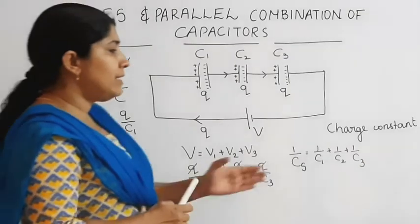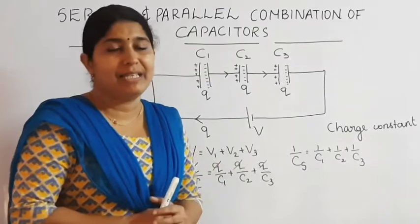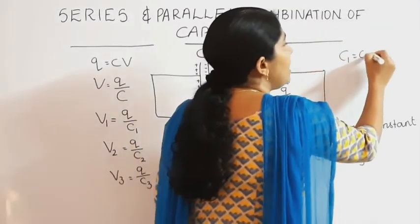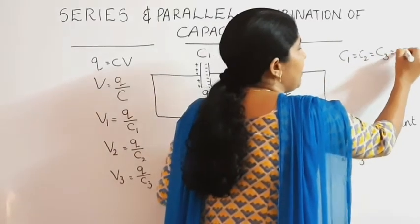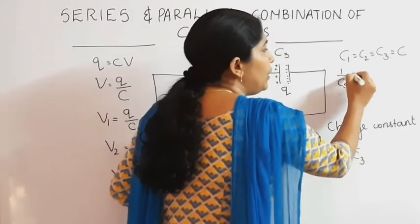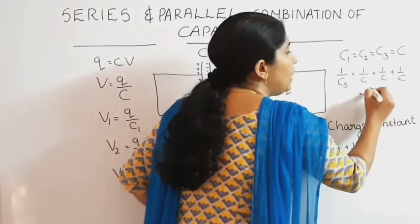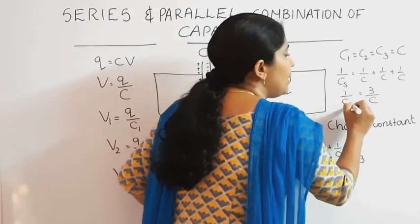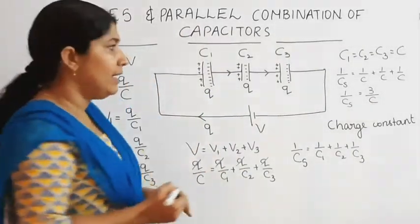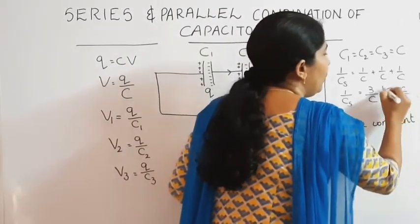If all capacitors C1, C2, C3 have the same capacitance, that is C1 equals C2 equals C3 equals C, then 1 by Cs equals 1 by C plus 1 by C plus 1 by C, which equals 3 divided by C. Therefore Cs equals C by 3.